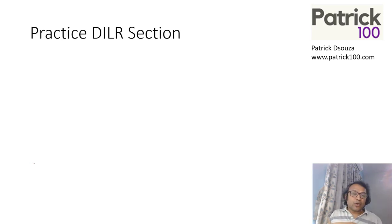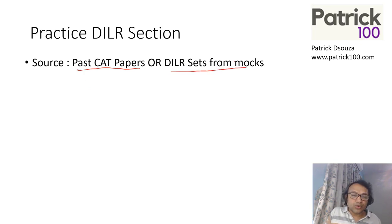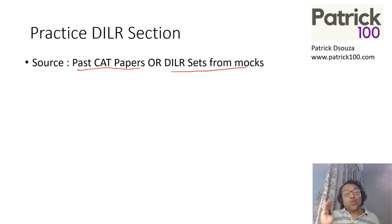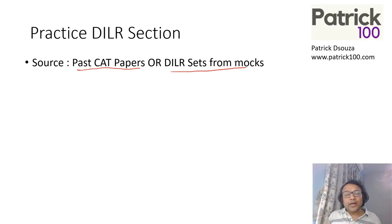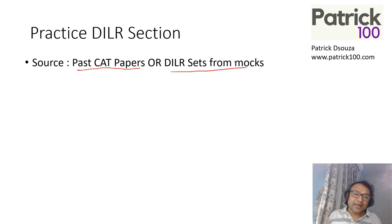So how do you actually practice? First is source. Past CAT papers are a good source, and DLR sets from mocks are a good source. Look at these and try to practice. Older papers will have a slightly different kind of DLR sets; newer CAT papers are more relevant. If you haven't solved them, you can solve them. You can also look at various mocks, pick up DLR sets from there, and try to solve — that should help you practice better.